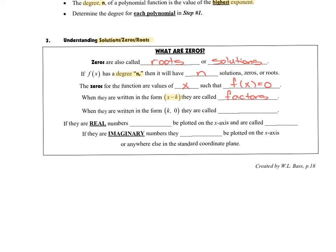If those values are written as ordered pairs — understanding that the y-coordinate is zero — we call them x-intercepts. Now it's important to understand that if they are real numbers, they can be plotted on the x-axis and we call them intercepts. If they're not real numbers, we are not typically going to write them as factors or as x-intercepts. If they're imaginary numbers, they cannot be plotted on the x-axis or anywhere on our standard coordinate plane, so we don't worry about them. They're still solutions, roots, and zeros — but we won't write them as factors or intercepts because they can't be plotted.